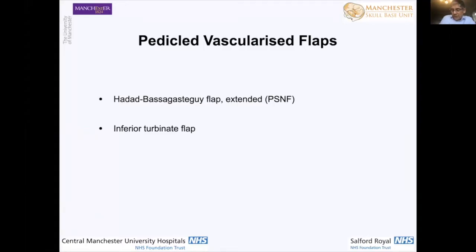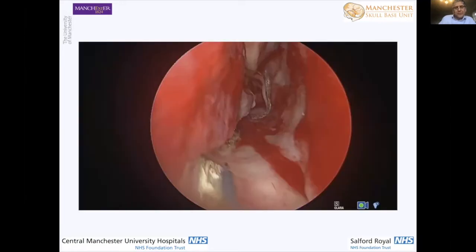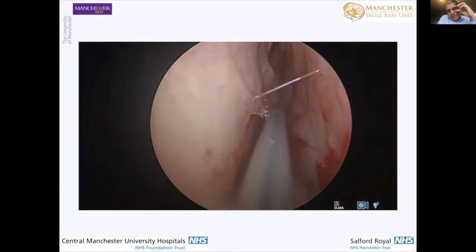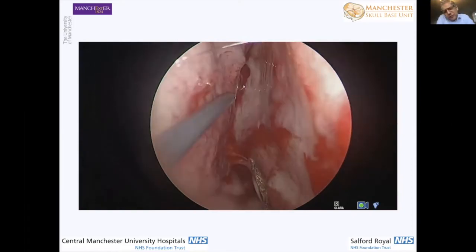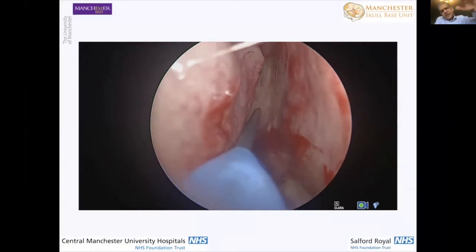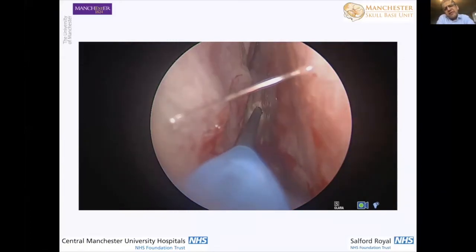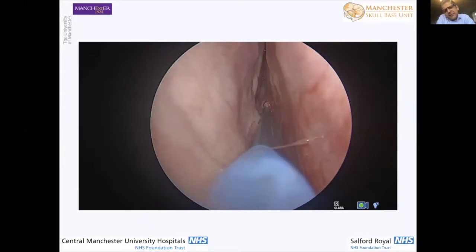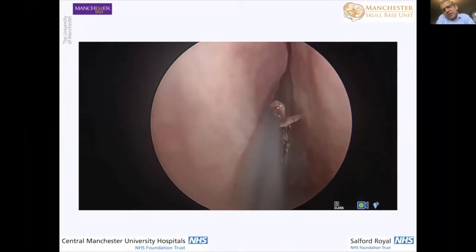Our go-to local autograft flaps for a primary operation, or secondary operation where flaps haven't been compromised previously, are an extended posterior septal nasal flap and an inferior turbinate flap. The extended flap goes down onto the floor of the nose and even underneath the inferior turbinate. I've also harvested all the tissue off a turbinate for larger defects. We use a monopolar cautery to delineate the margins of the flap, just underneath the sphenoidal ostium on the right side.